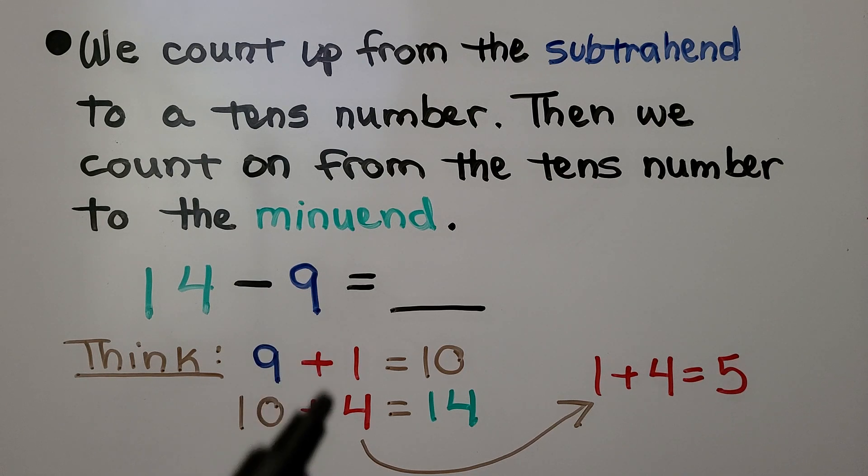So we counted on a 1 and a 4, which is 5. So 14 minus 9 is equal to 5.